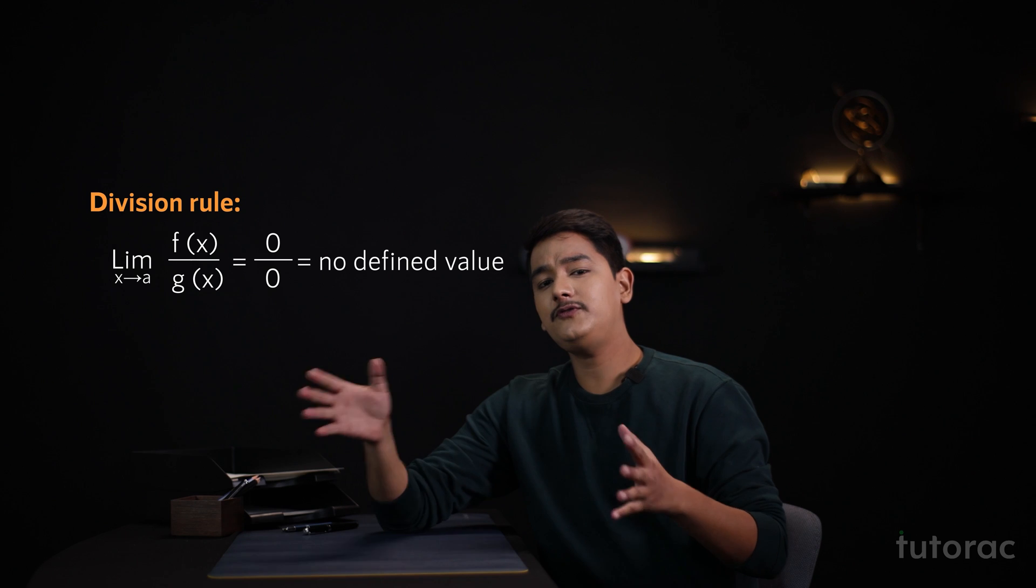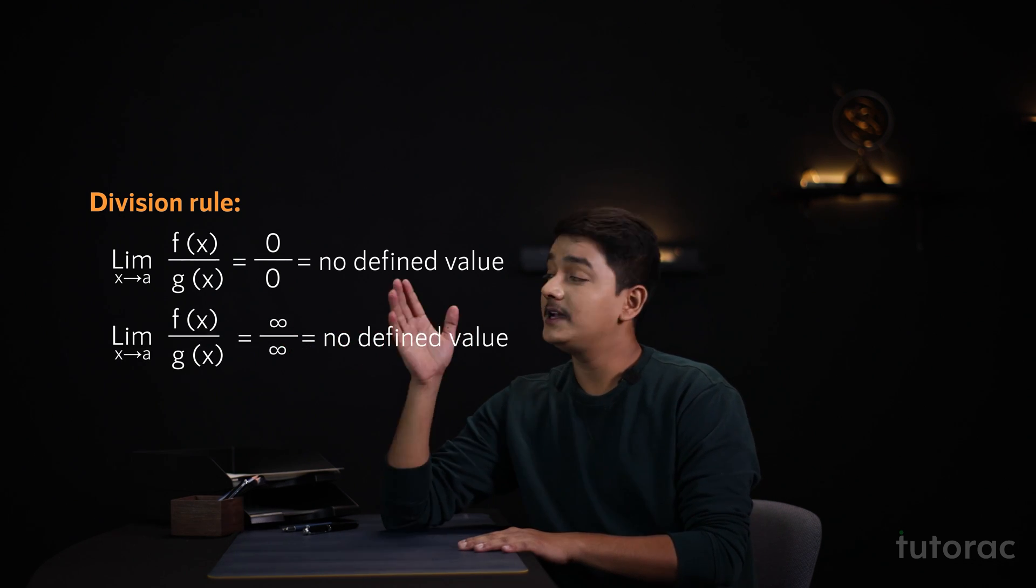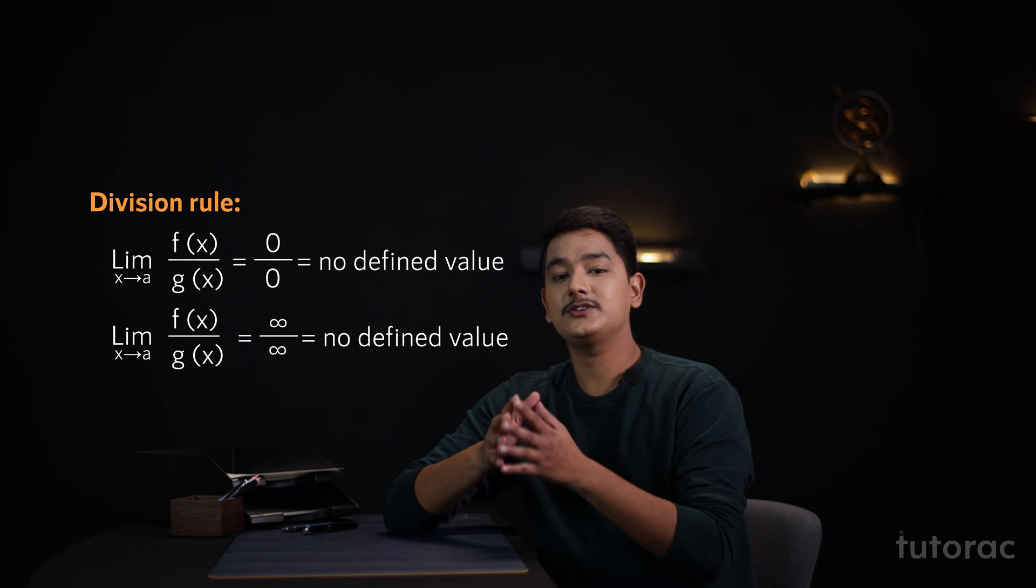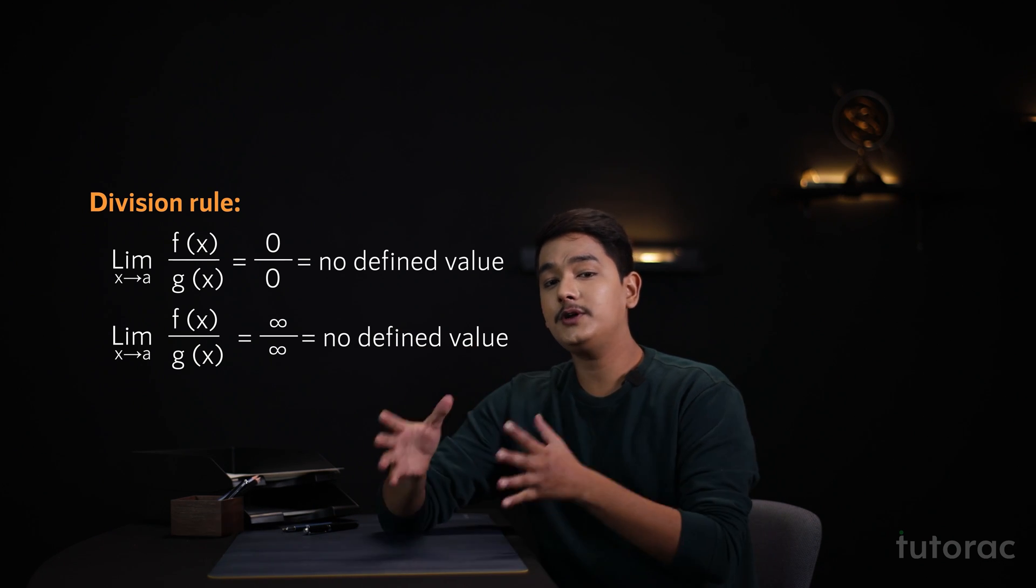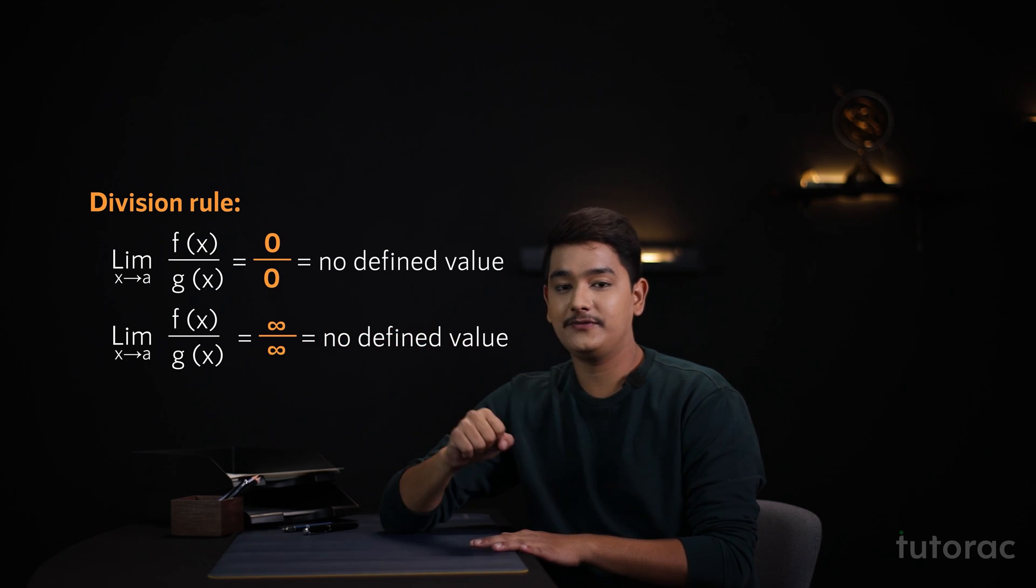Similarly, if both the functions are approaching to infinity, we won't get any value as infinity by infinity is not a defined number. This gives us our two more indeterminate forms that are 0 by 0 and infinity by infinity.